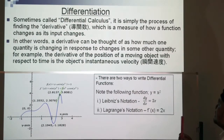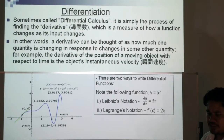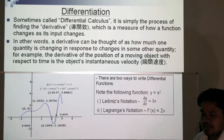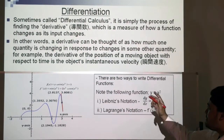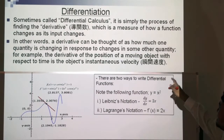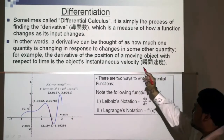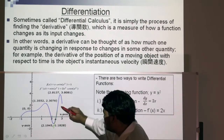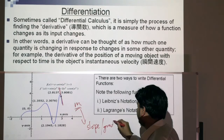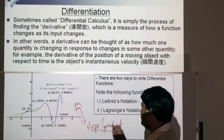The next key topic under calculus is differentiation — sometimes called differential calculus. It is simply the process of finding the derivative, which is a measure of how a function changes as its input changes. A derivative can be thought of as how much one quantity is changing in response to changes in some other quantity. For example, the derivative of the position of a moving object with respect to time is the object's instantaneous velocity.